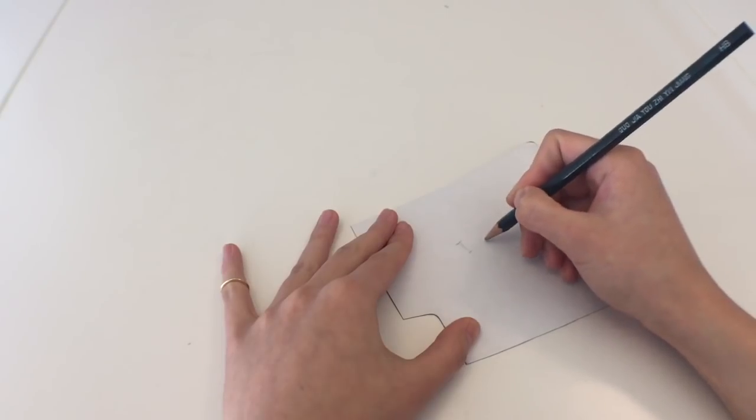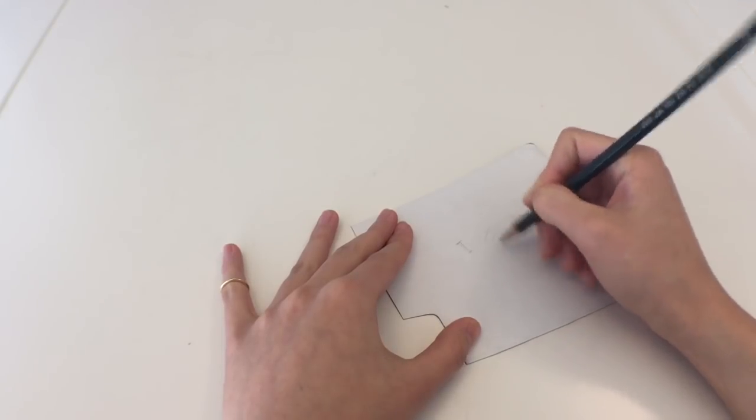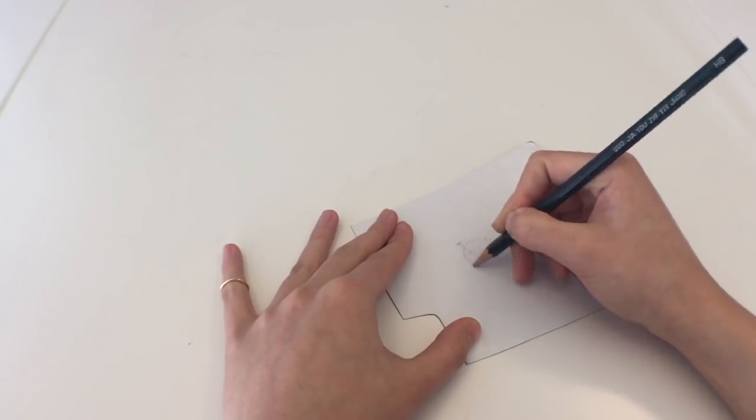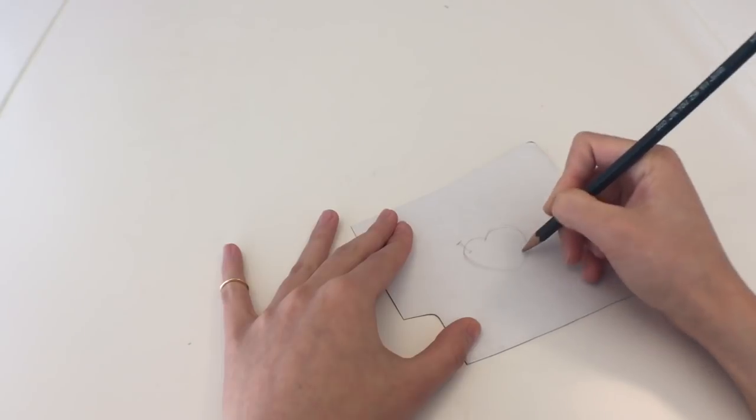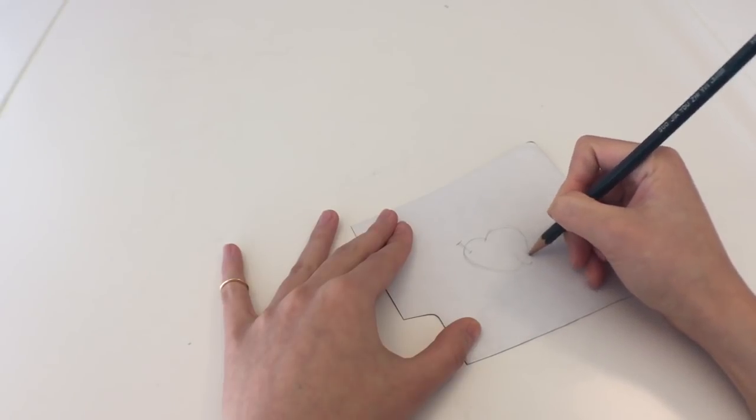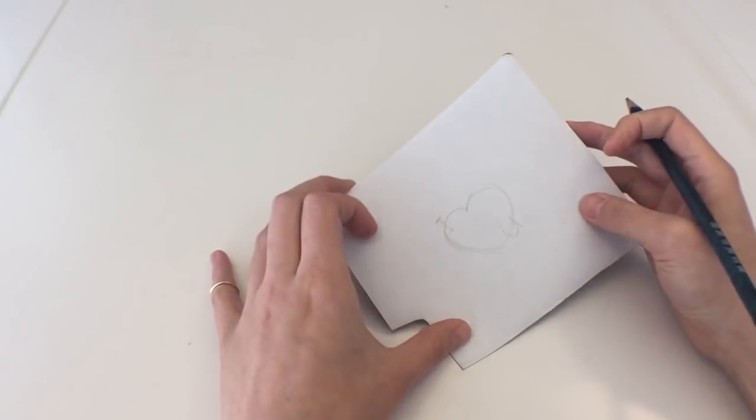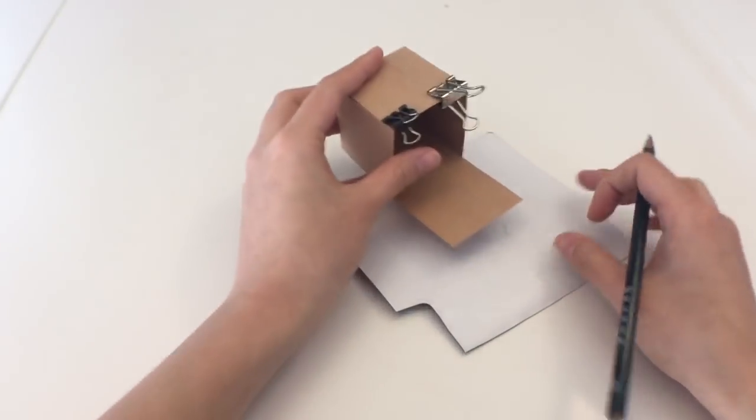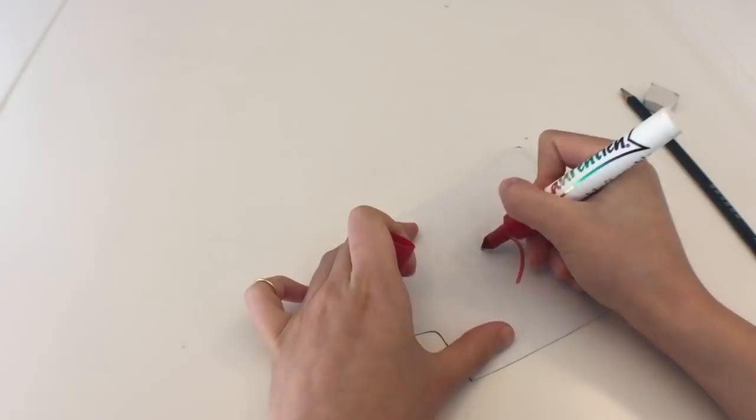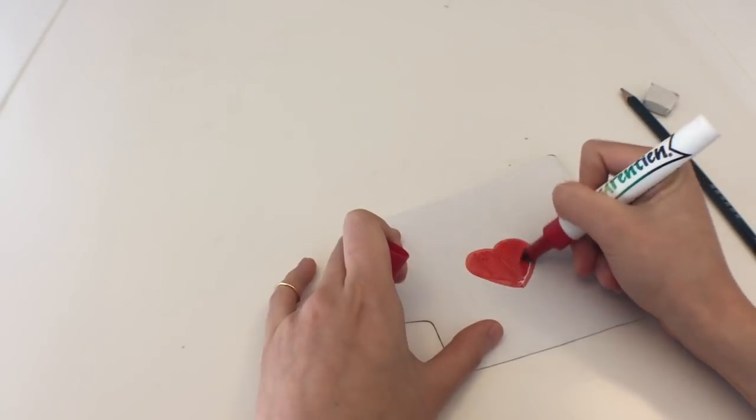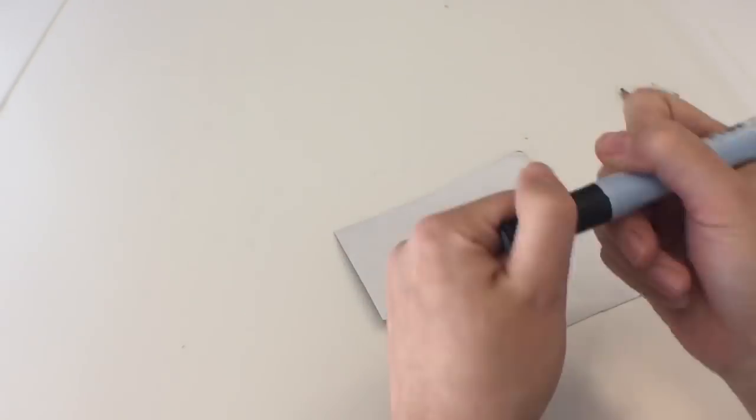Moving on to designing what will actually pop out of the box. Since it's Valentine's Day, I made mine designed to say I love you with a little heart. You just want to make sure that the design is not bigger than the box itself. Otherwise, it will overflow. And just decorate it and color it in before cutting out the whole design.